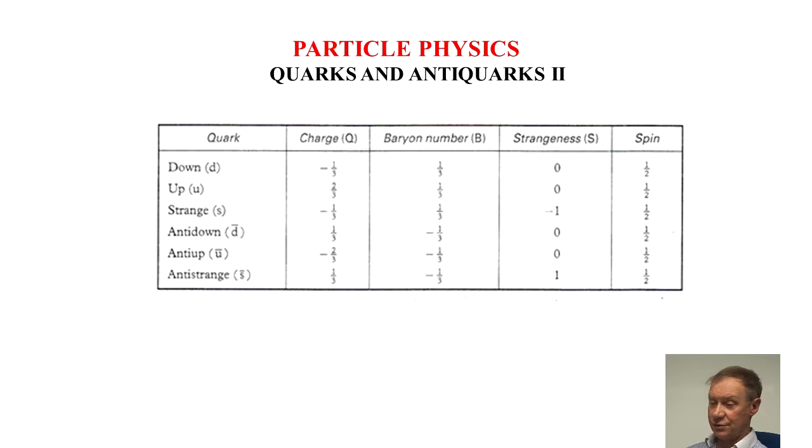With the baryon number, charge and strangeness. These can be used in solving problems involving whether it's possible for interactions to occur or not, as we'll see in a minute.